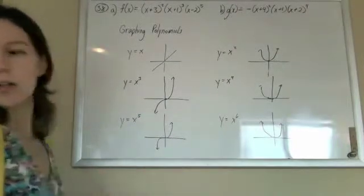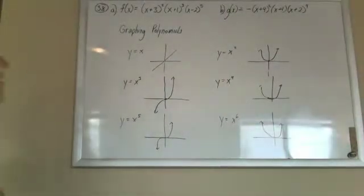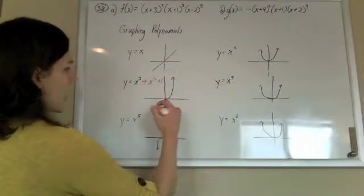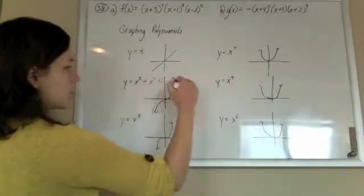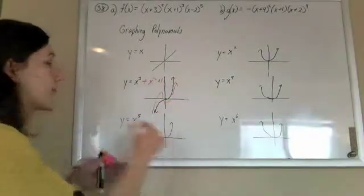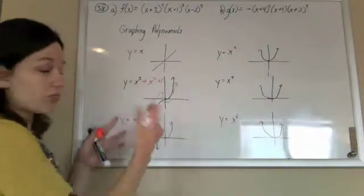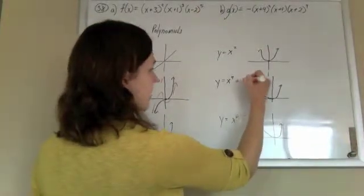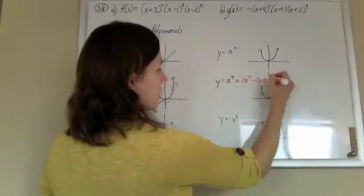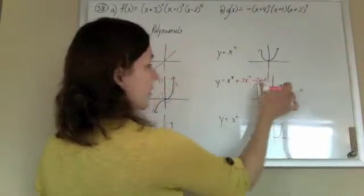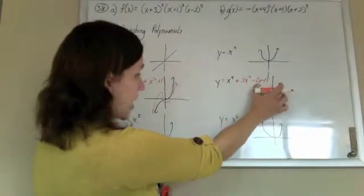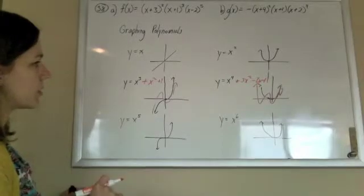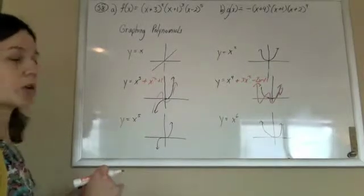If you were to add stuff onto this, like if you were to add x cubed plus x squared plus one, that's going to make it wiggle in the middle. I don't know exactly where that's not perfect, but it's going to make it wiggle. Same things with these. If I added on stuff to the end, it would just make it wiggle. The end behavior would still be the same, but we would have a more interesting looking graph.